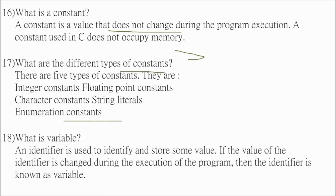What is a variable in C? An identifier which is used to identify and store some value. These are variables. So if the value of the identifier is changed during the execution of the program, then the identifier is always a variable. These are variables.